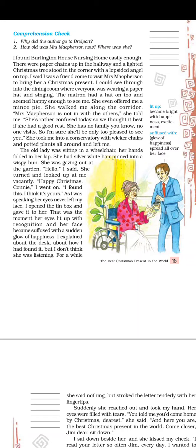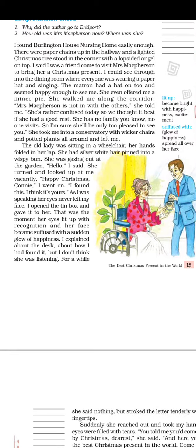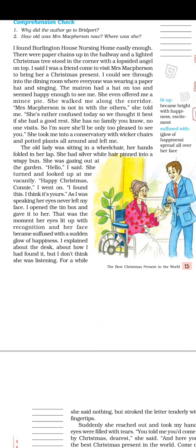She walked him along the corridor — corridor means a passage or veranda. She explained that Mrs. McPherson is not with the others today because she is rather confused. Confused here means she has lost her balance of mind, becoming somewhat disoriented, so they thought it best she had a good rest in another room.